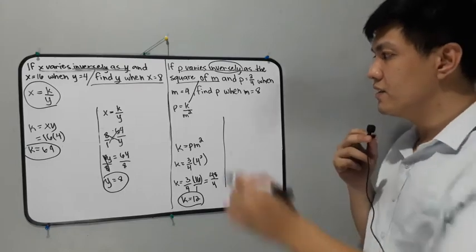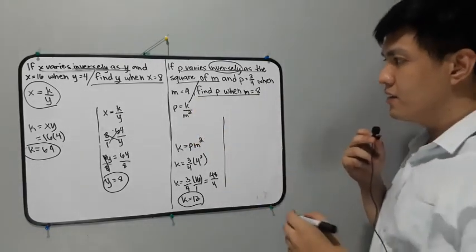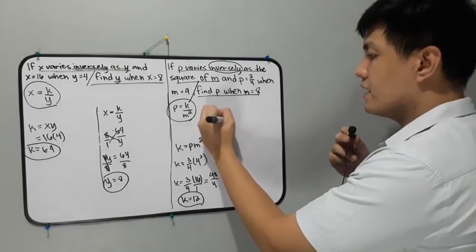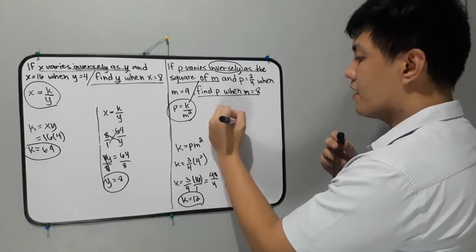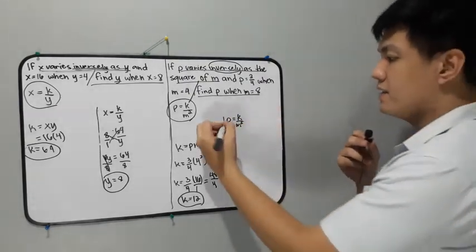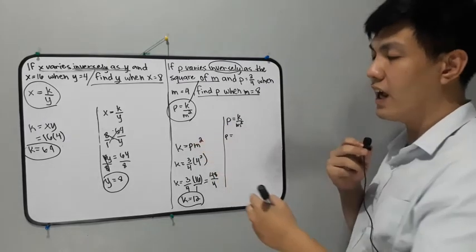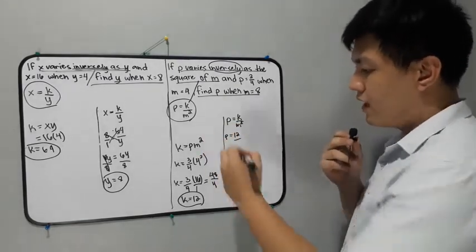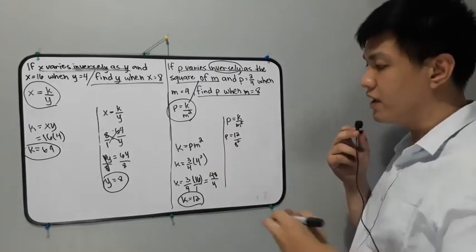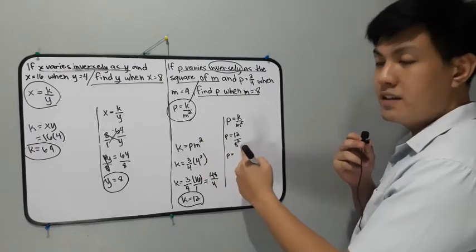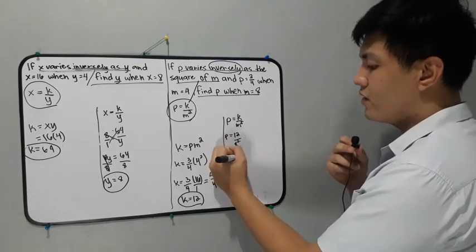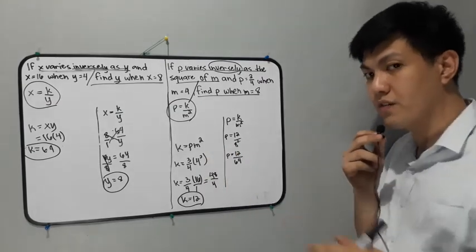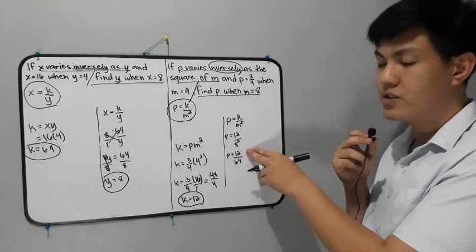For the second part of the statement: find P when M is equal to 8. We use the equation P is equal to k over M squared. We're looking for P, so we replace k with 12 and M with 8. So we have 12 over 8 squared. Don't forget the squared. Simplify the denominator: 8 squared is 8 times 8, which is 64. So we have 12 over 64.